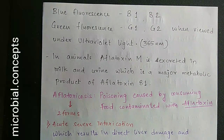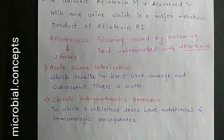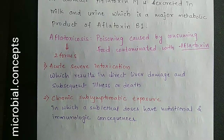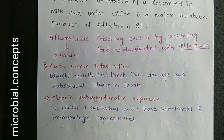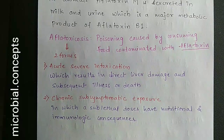Aflatoxicosis is the poisoning condition caused by consumption of food contaminated with aflatoxin. There are two forms: acute and chronic. Acute severe intoxication results in direct liver damage and subsequent illness or death. Chronic exposure involves long-term consumption at low dosages, and can show sublethal effects with nutritional and immunological consequences, including immunosuppression.